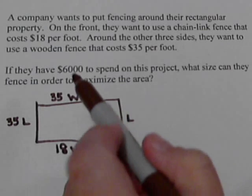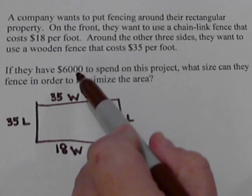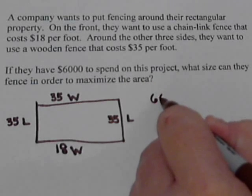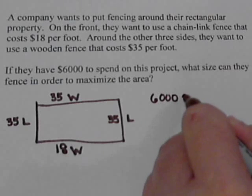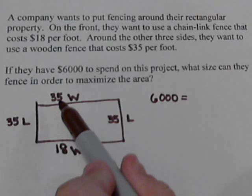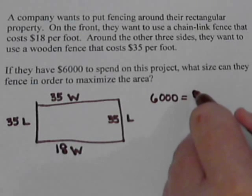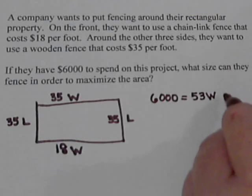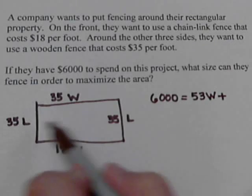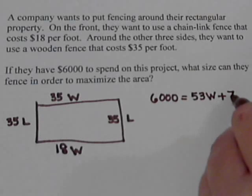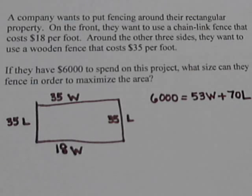Now we know we're going to be restrained by the $6,000 that we have to spend. So let's write that equation over here. It's $6,000. And that's going to come from these two sides. So $18W plus $35W. So that gives us $53W. Plus these two sides, $35L and another $35L. That's $70L.